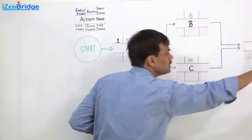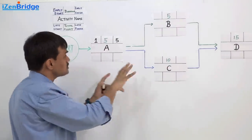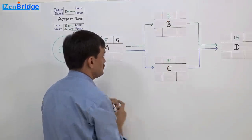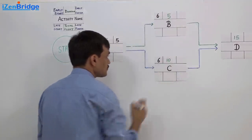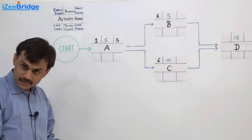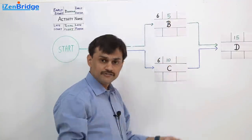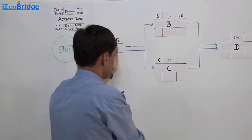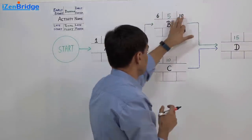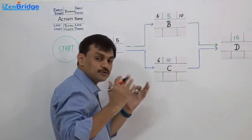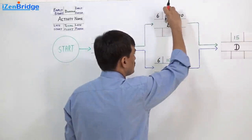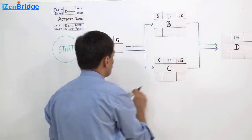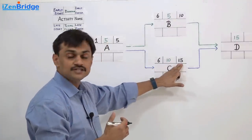This forward calculation is called the forward pass. In the forward pass we calculate early start and early finish. Early finish equals early start plus duration minus 1. So for activity B: 6 plus 5 minus 1 equals 10. For activity C: early start is 6, duration is 10, so 6 plus 10 minus 1 equals 15. Activity C can finish earliest on day 15.